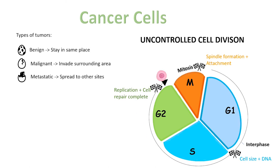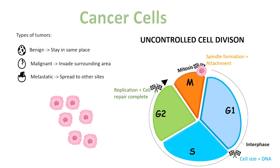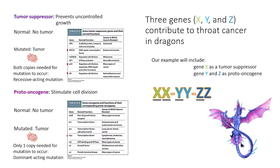Here is an illustration of a cell that has surpassed all checkpoints and has created uncontrollable division. Tumor suppressor genes prevent uncontrolled growth. Both copies need to be mutated for tumors to occur. Normal genes do not create tumors; however, mutated alleles mean that the gene is unable to stop growth. This is a recessive-acting mutation, meaning it is homozygous. An example of tumor suppressors is P53.